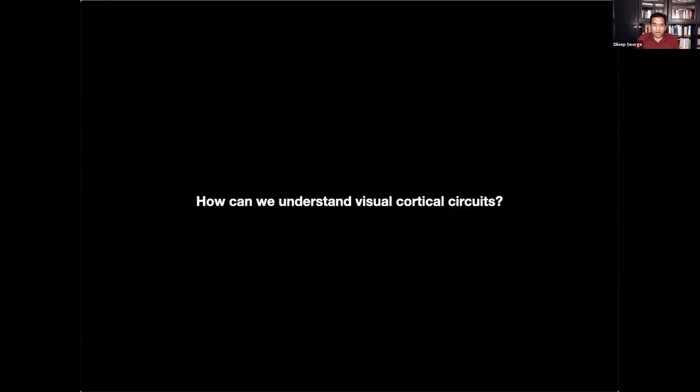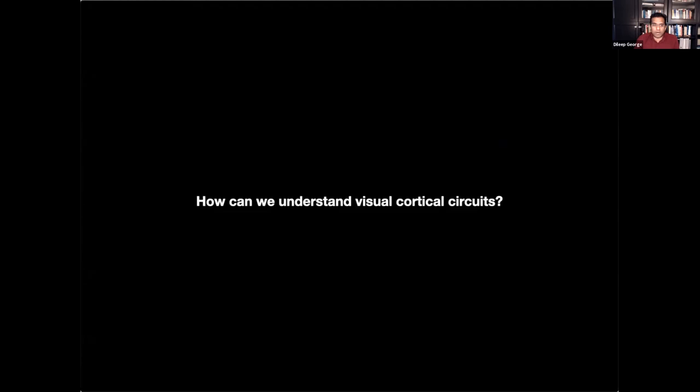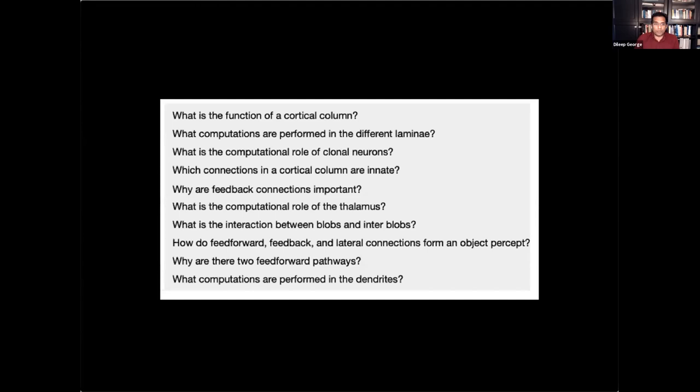So the question that we are after is how can we understand visual cortical circuits? By understand we mean we should be able to answer all these questions. What is the function of a cortical column? What computations are performed in different laminae? What is the computational role of clonal neurons? Which connections in a cortical column are innate? Why are feedback connections important? What's the computational role of thalamus? All these things that we are interested in, and we should be able to assign precise roles for each of them. That's our goal.